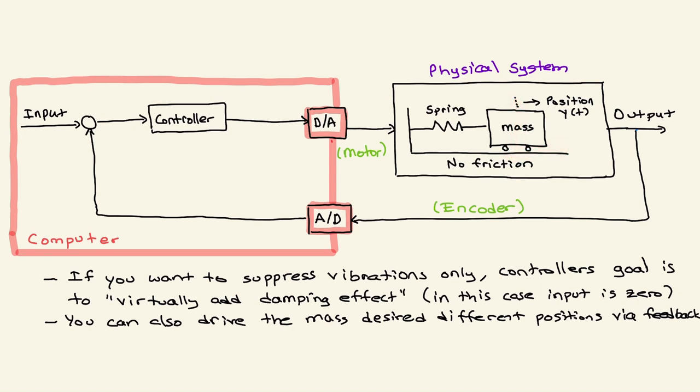In other words, the point that I am trying to make here: a feedback control algorithm, the controller, basically uses outputs of the system and minimizes the error between the desired input and the measured output, and then produces a control signal which is converted to digital-to-analog converter. Then this signal is applied to the actuators of the system - in this case the motor of the mass - such that you can virtually add some damping effect or some other effects to basically make the physical system's output behave as desired.